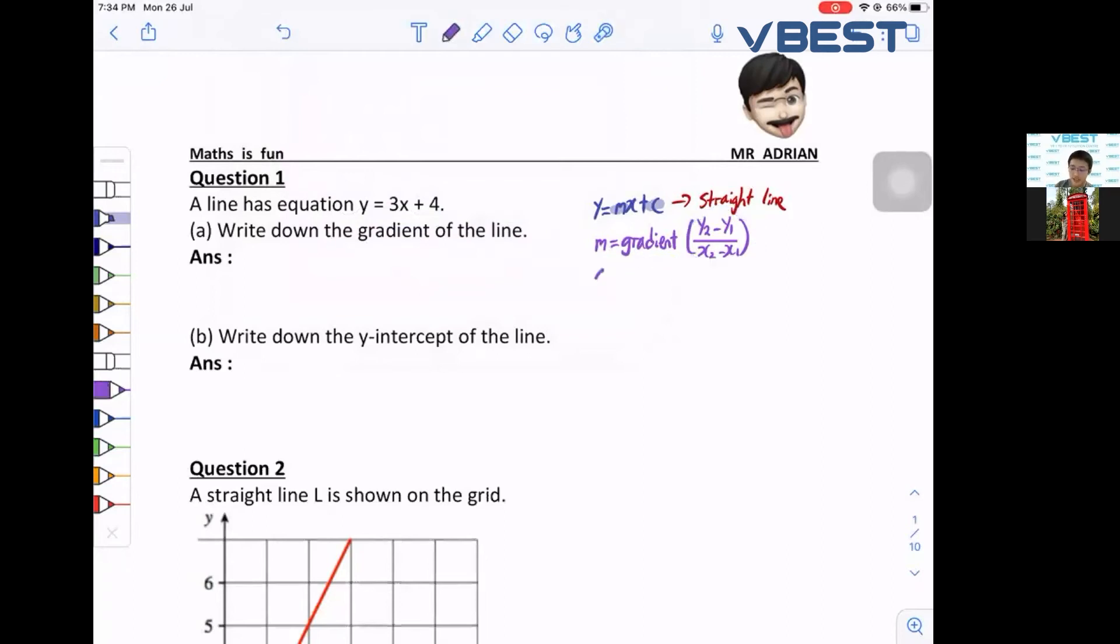Second, what is your c? c actually represents your y-axis. Some people call it the y-intercept. You can say your c is y-axis, your c is y-intercept.